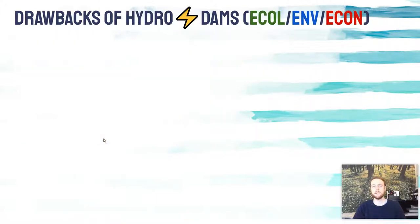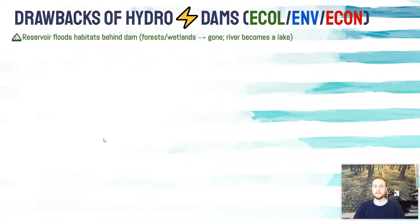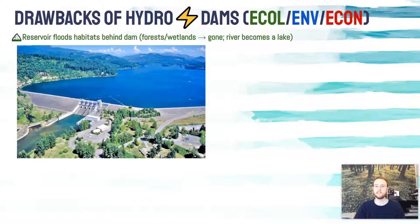Now we'll look at the ecological, environmental, and economic impacts of dams. Dams flood habitats behind the dam — forests and wetlands could become completely submerged and no longer exist as habitats. Rivers, which are shallow, fast-moving bodies of water, become lakes, which are vastly different ecosystems. Organisms that relied on the forest or the wetland no longer have a home or must migrate.